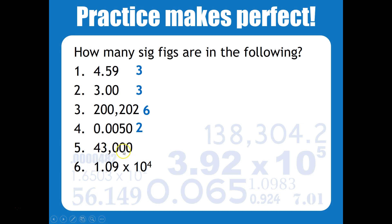43,000, these are three zeros at the end, so they're trailing zeros. However, there is no decimal point, so that is going to mean that this is only going to have two sig figs.